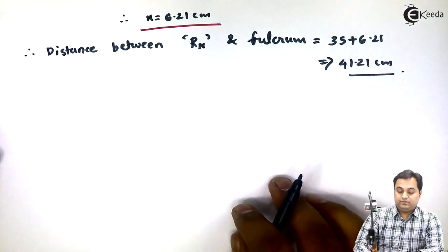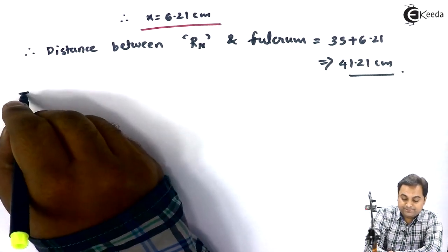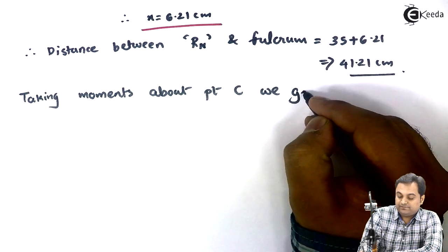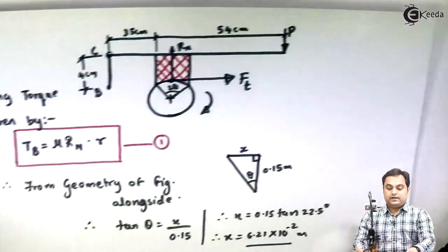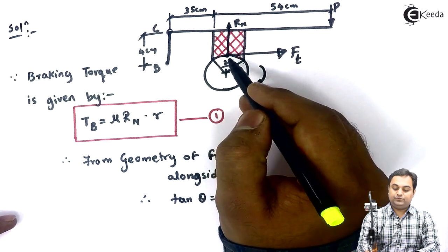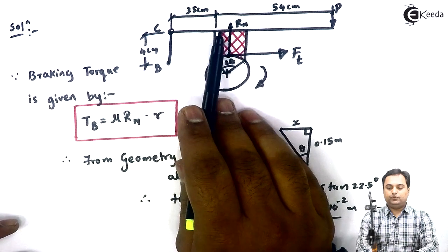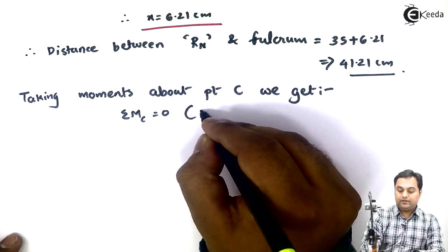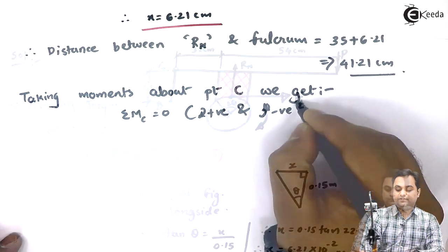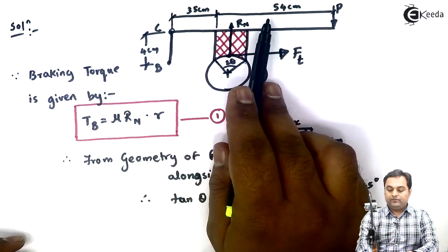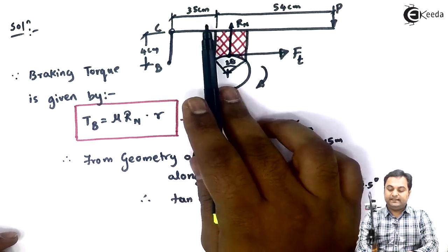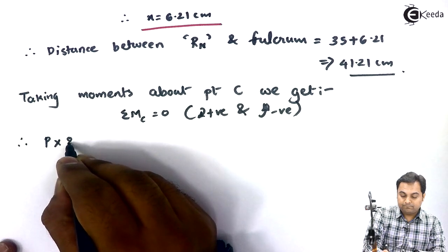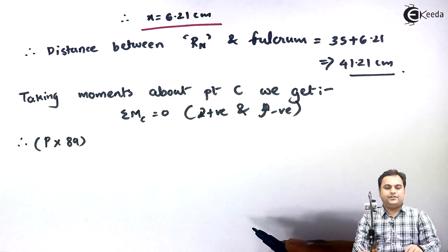Taking moments about point C — the distance of R_N from point C has been calculated as 41.21 cm. Taking clockwise moment as positive and anticlockwise as negative, we get: P × (54 + 35) = P × 89 cm as the clockwise moment. All distances are in centimeters.